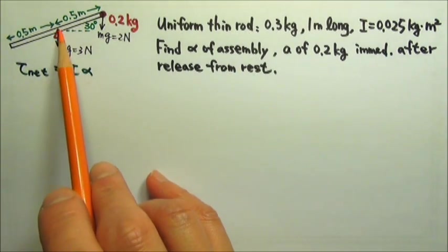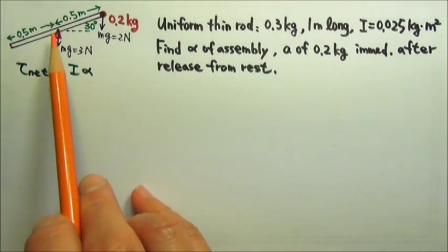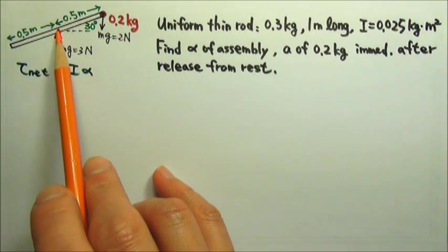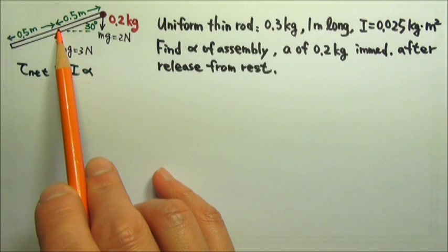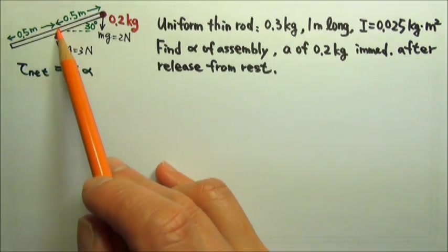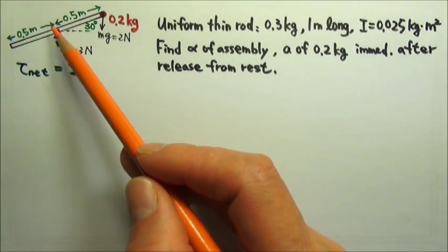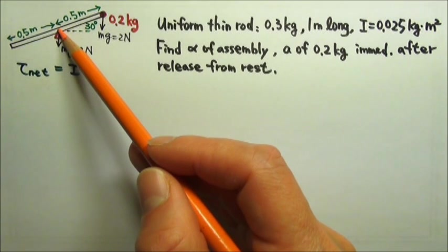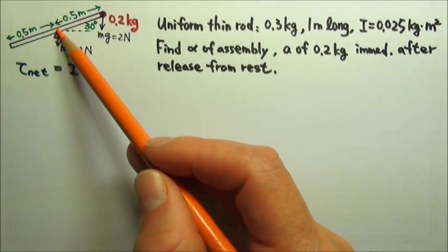The assembly is touching the axle right here. The axle exerts a force on the assembly, but whatever force this axle exerts on the system, it provides zero torque because the line of force goes through the axis. Therefore, the lever arm is zero, so we do not have to worry about the force from the axle.